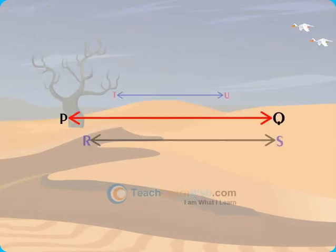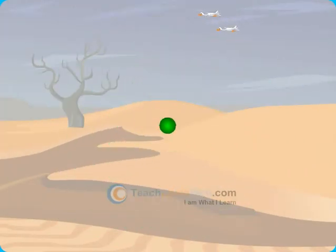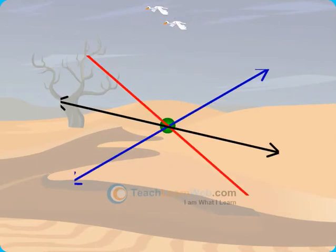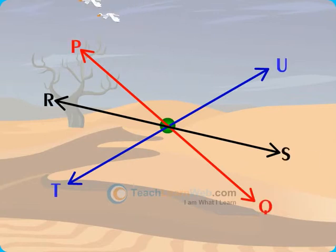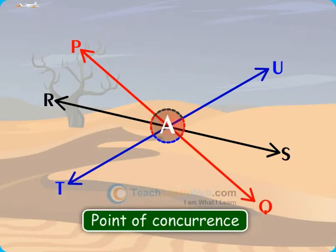We are already aware of lines. But what are these concurrent lines? Take a point A on a plane and draw 3 to 4 lines passing through this point. All these lines PQ, RS, TU are concurrent as they pass through the common point A. A is the point of concurrence.